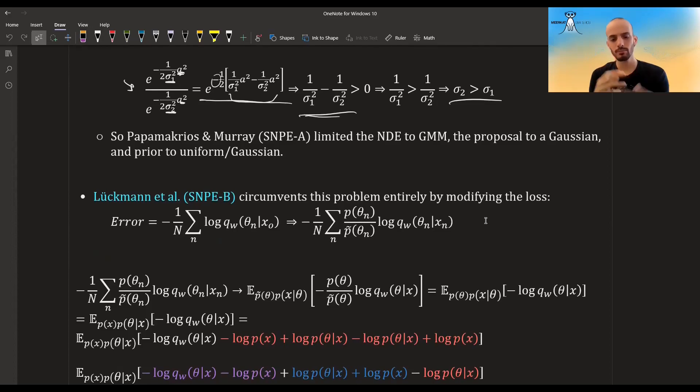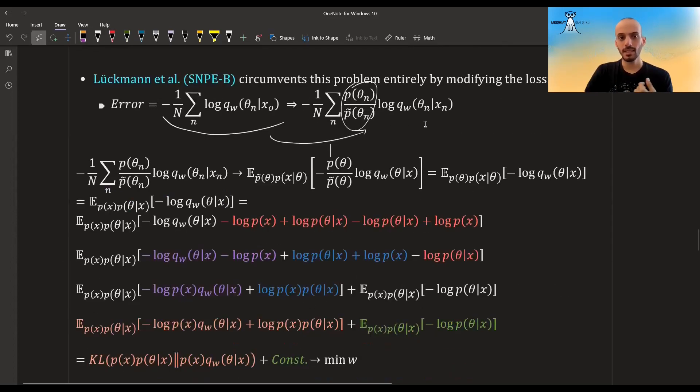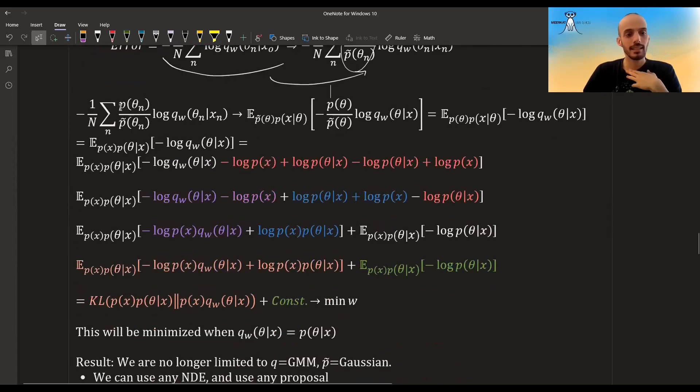Instead of using different proposal priors, getting some GMM in the end, and then multiplying it by a correction, they say let's put this correction already in the loss. So if you put the correction already in the loss and you take, instead of just the negative log likelihood, and you weight it by this correction term, then they prove that minimizing this error gives you the correct posterior.